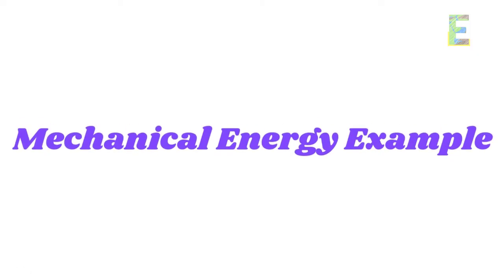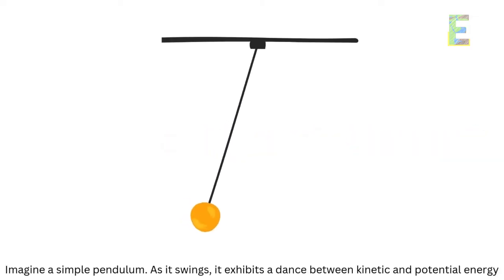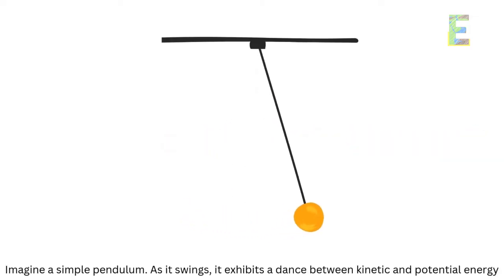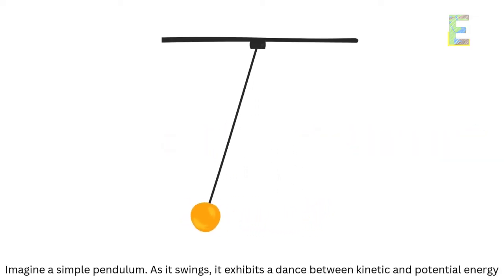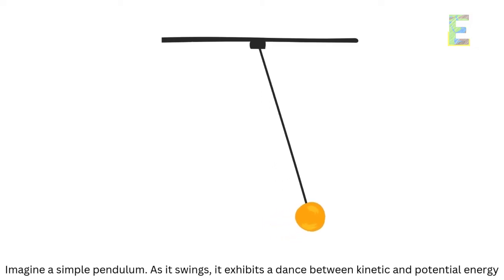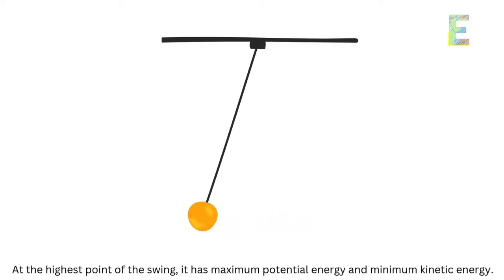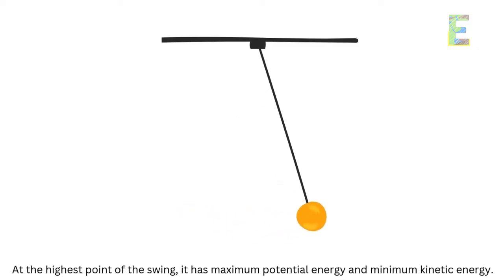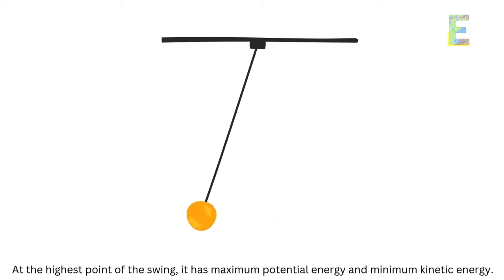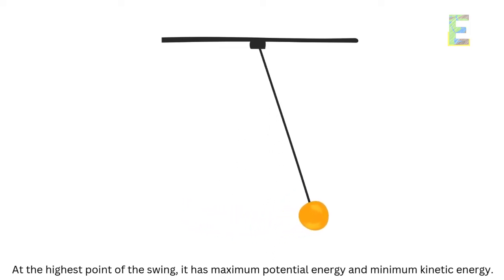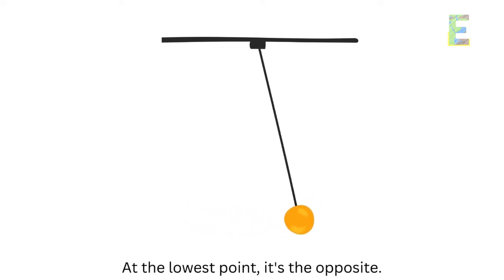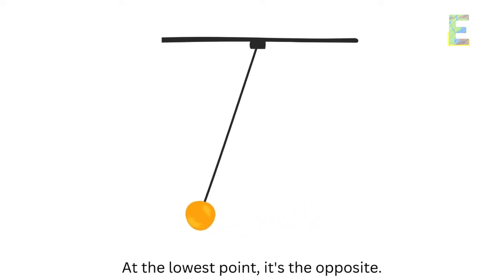As a mechanical energy example, imagine a simple pendulum. As it swings, it exhibits a dance between kinetic and potential energy. At the highest point of the swing, it has maximum potential energy and minimum kinetic energy. At the lowest point, it's the opposite.